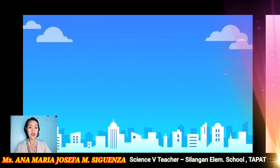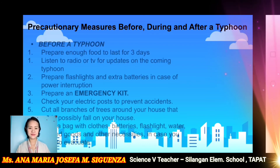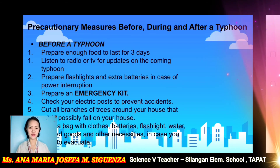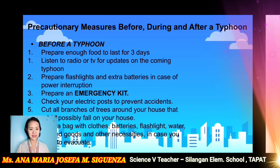Let us proceed to the precautionary measures before, during, and after the typhoon. We need to practice these things to stay safe. Before a typhoon, once we learn that a typhoon is coming, we have to prepare enough food to last for three days. We have to listen to radio or TV for updates on the oncoming typhoon. We have to prepare flashlights and extra batteries in case of power interruption. And we have to prepare an emergency kit. We also have to check electric posts to prevent accidents.